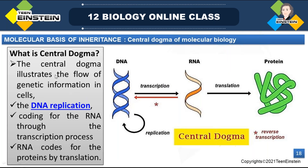Central dogma means the flow of genetic information in the cell: DNA replication, then DNA codes for RNA through transcription, then RNA codes for protein through translation. From DNA to RNA is transcription, and from RNA to protein is translation.